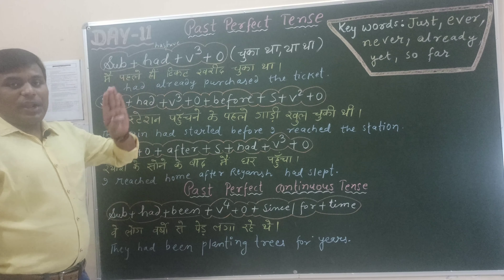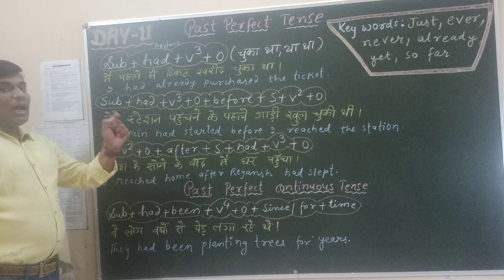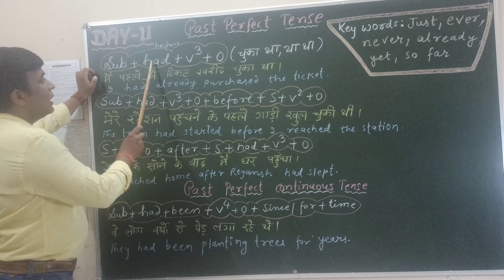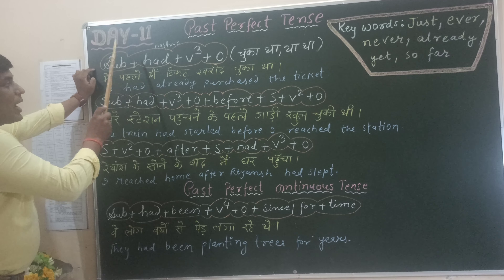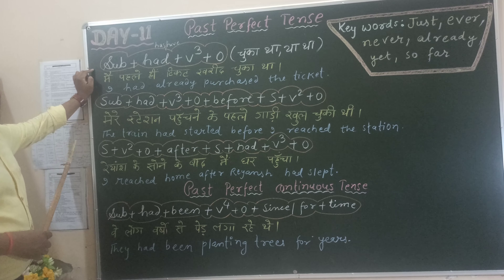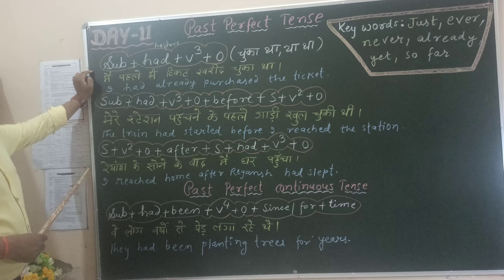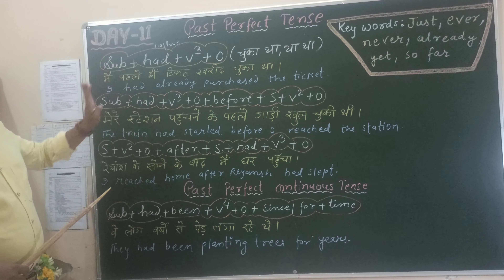In interrogative sentences, had is moved to the front. For example: had you ever gone there? — क्या आप पहले कभी वहाँ गये थे? Or: had you done this so far? This is how we frame interrogative sentences with past perfect tense.